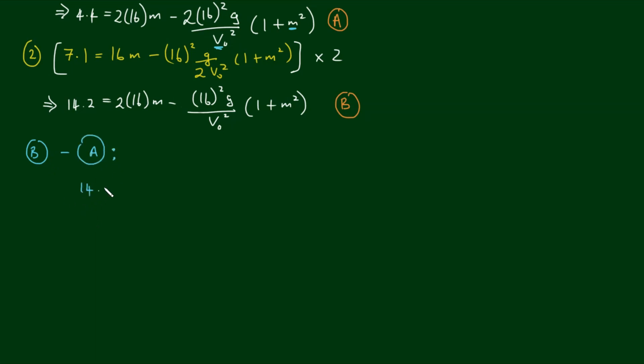So we have 14.2 equals 2 by 16m minus 16 squared g over v0 squared times 1 plus m squared, and we're going to subtract from this 4.4 equals 2 by 16m minus 2 by 16 squared g over v0 squared times 1 plus m squared.